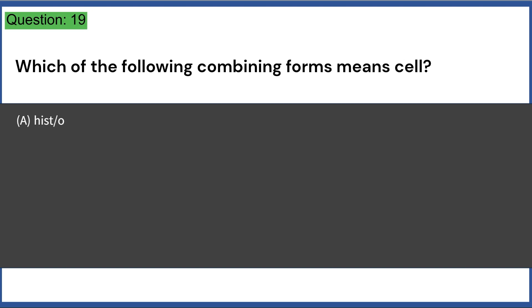Which of the following combining forms means cell? a. Histo b. Pulmono c. Neuro d. Cyto e. Phreno. Answer, D.